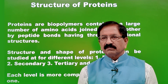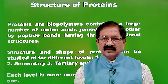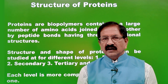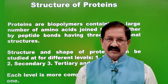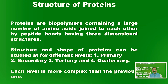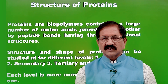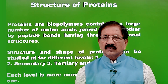The structure and shape of proteins can be studied at different levels. Proteins can be studied at the primary structure level, the secondary structure level, the tertiary structure, and the quaternary structure. Each level is more complex than the previous one — the primary structure is the simplest, followed by the secondary, and then the more complex tertiary and quaternary structures.